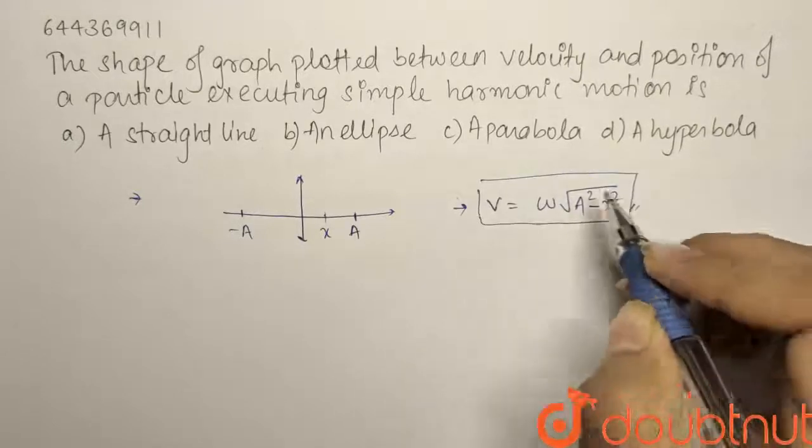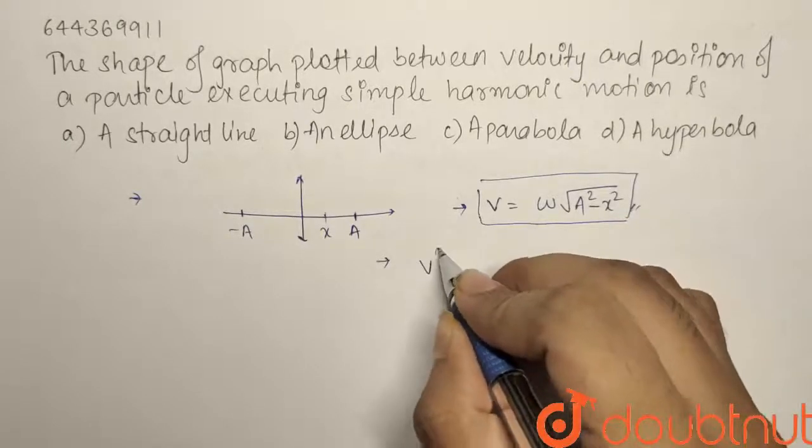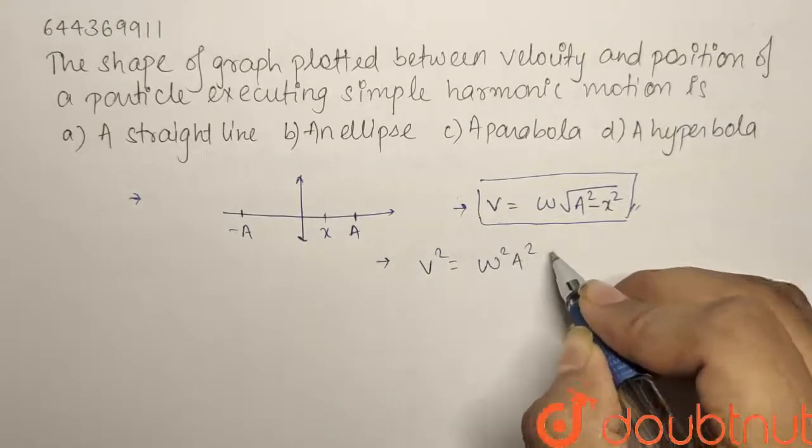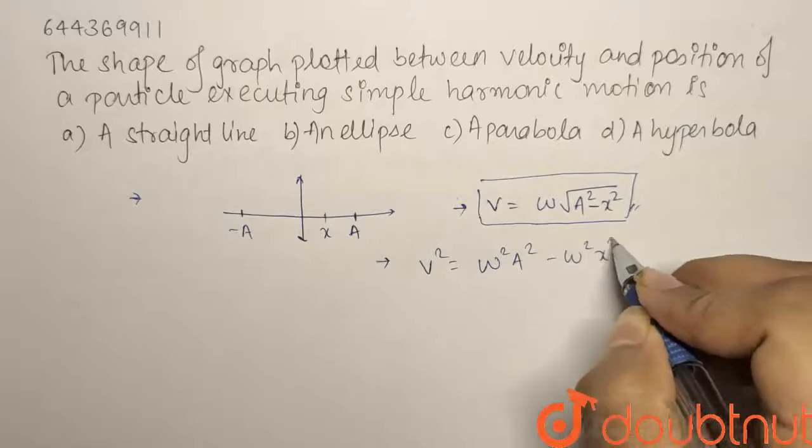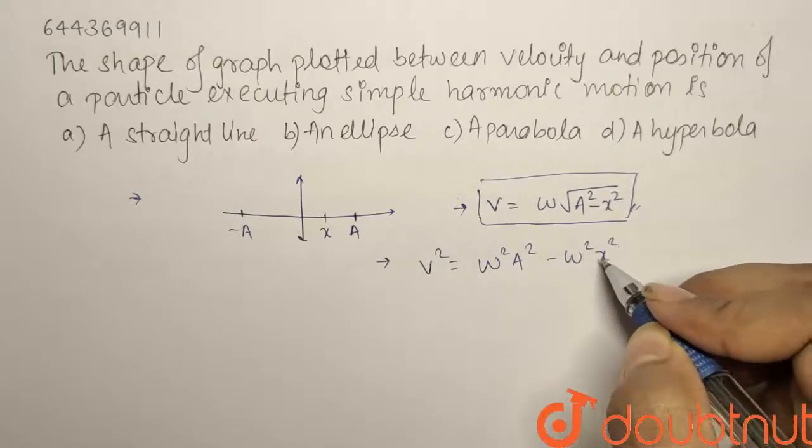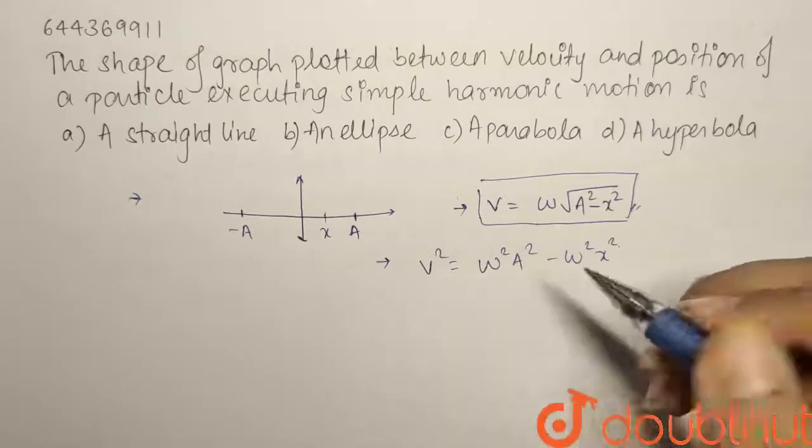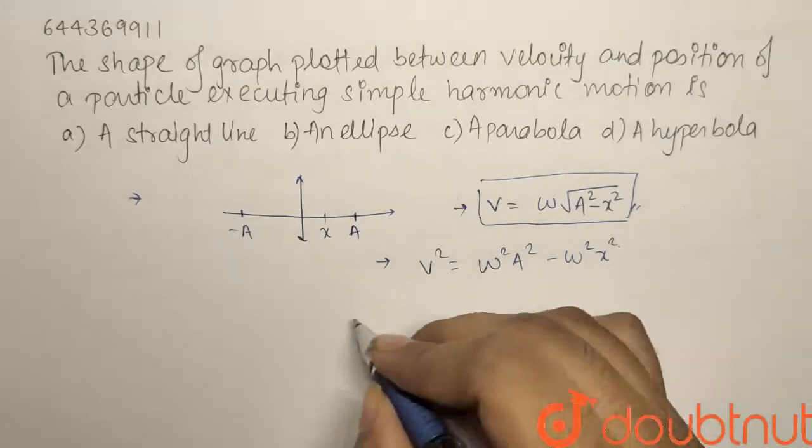Now what we will do, let us square that. So if we square it, it becomes v² = ω²A² - ω²x². And let us take this ω²x² to the LHS and divide the whole equation by ω²A². So what we will be getting,